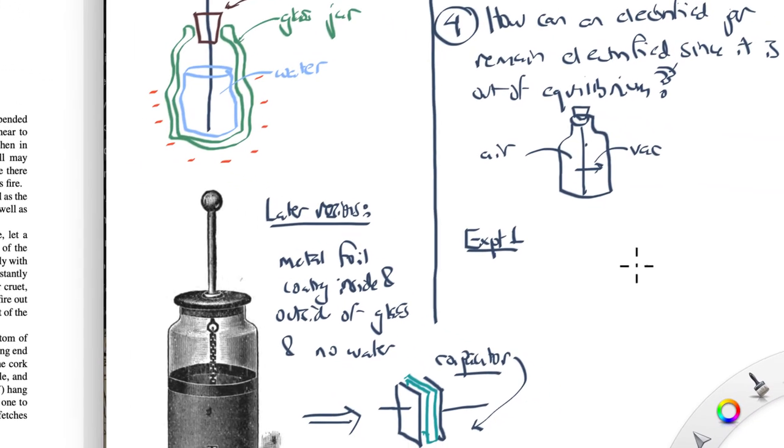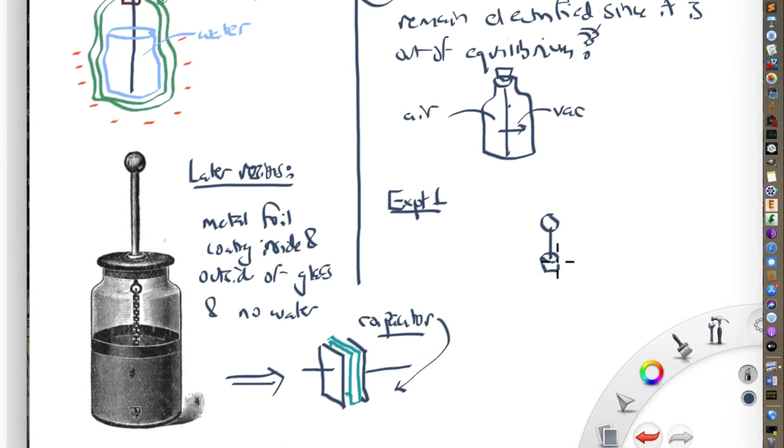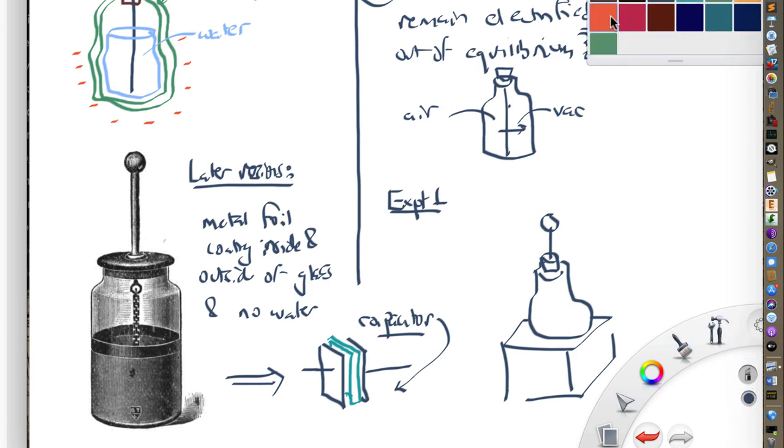So let's first talk about experiment one and we'll spend a couple of minutes on this and then we'll probably stop and talk about experiments two and so on later. So what does he say? He says suppose we were to take one of these Leiden jars or Muchenbrook bottles and you were to place it on a wax block. So here is the Muchenbrook bottle and you were to place it, like he says, upon a wax block like this and you were to electrify it. So when you electrify it, it makes it so that, let's suppose that this is positively charged.